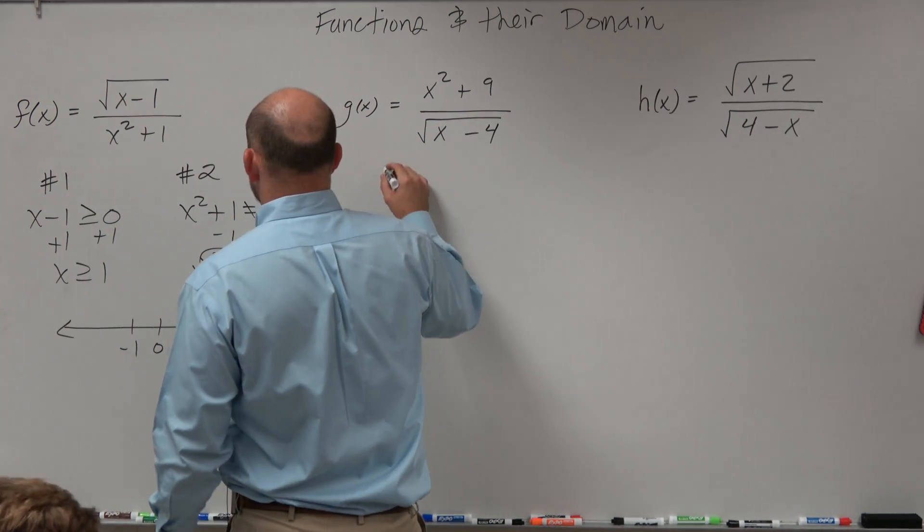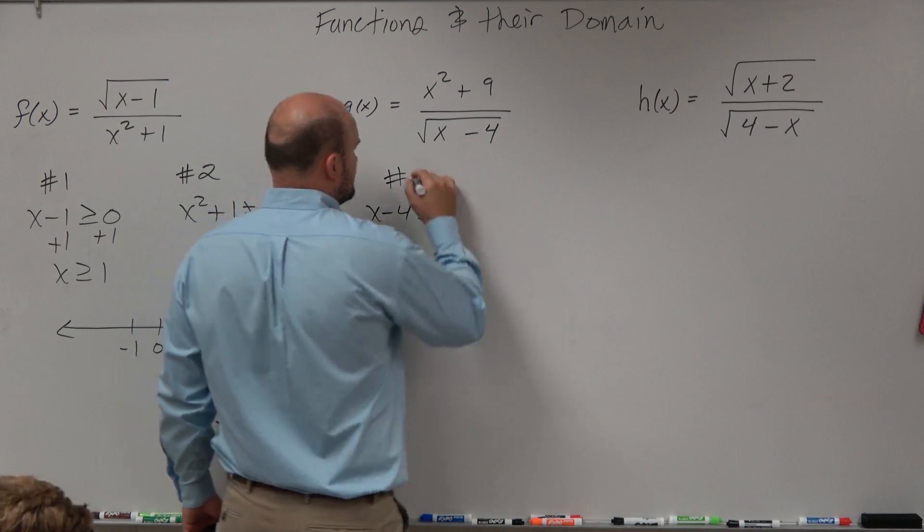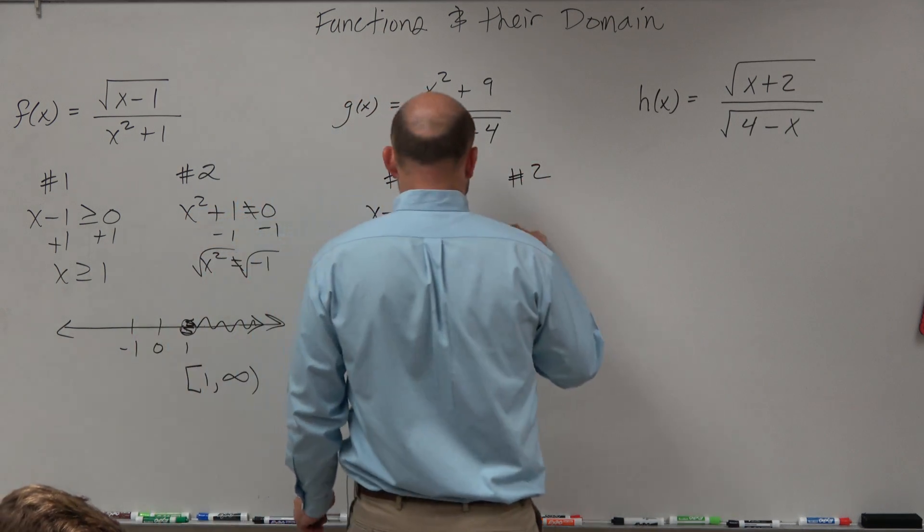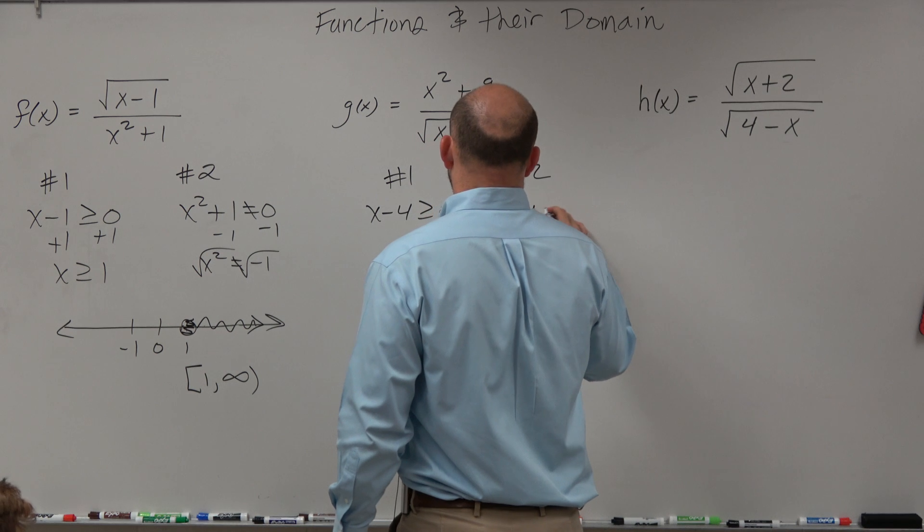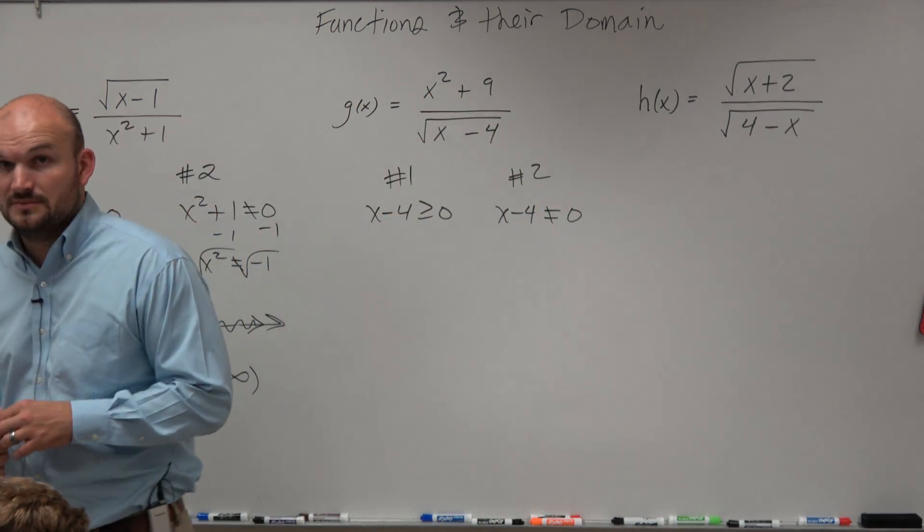The only thing we care about is restriction number one, which says x minus 4 has to be greater than or equal to 0. And restriction number two, where x minus 4 cannot equal 0. That's it.